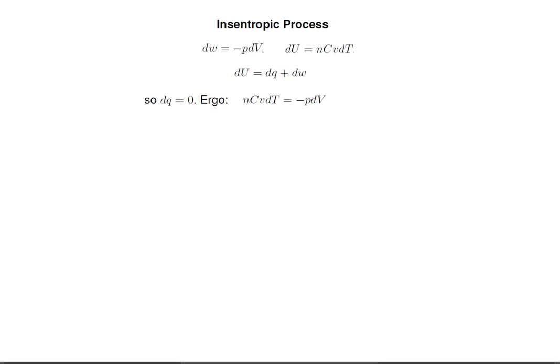From the first law, dU is the change in heat plus the change in work. But we already said that we're under adiabatic conditions, so dq is zero. Ergo, NCV dT is got to equal minus PDV.